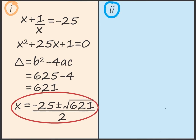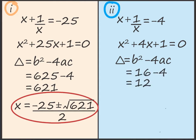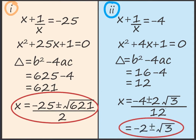Now for equation 2: x plus 1 by x equals minus 4, giving x squared plus 4x plus 1 equals 0. Delta equals b squared minus 4ac comes to 12. Therefore x equals minus 4 plus or minus 2 root 3, upon 2, which simplifies to x equals minus 2 plus or minus root 3.